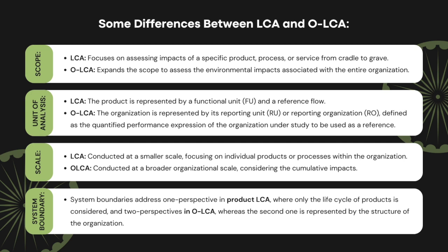What are the differences between OLCA and traditional LCA? Traditional LCA and OLCA differ in their scope, focus, and application and boundaries. First, in terms of scope: traditional LCA focuses on assessing the environmental impacts of a specific product, process, or service from cradle to grave, considering the entire life cycle of that particular entity. Meanwhile, OLCA expands the scope to assess the environmental impacts associated with the entire organization, considering the aggregated impacts of all products, processes, and services within the organization, encompassing its entire value chain.